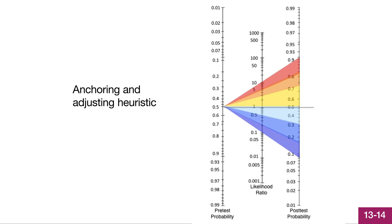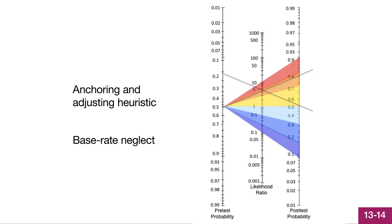This slide shows how a likelihood ratio of 4 to 5 would markedly adjust the anchor from a pretest probability of 50% to a post-test probability of about 80%. If we change the anchor to a pretest probability of 20%, this would bring the post-test probability back down to 50%, even with a positive test result with the same likelihood ratio. Failing to properly set the anchor for the pretest probability is a fallacy called base rate neglect.